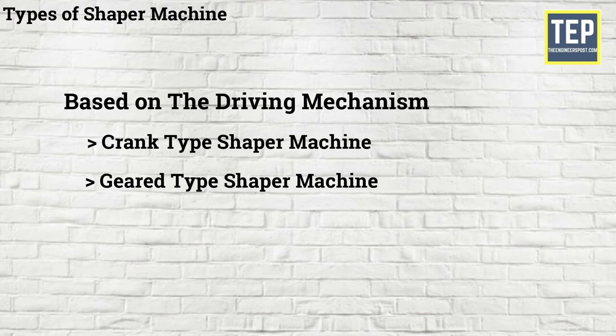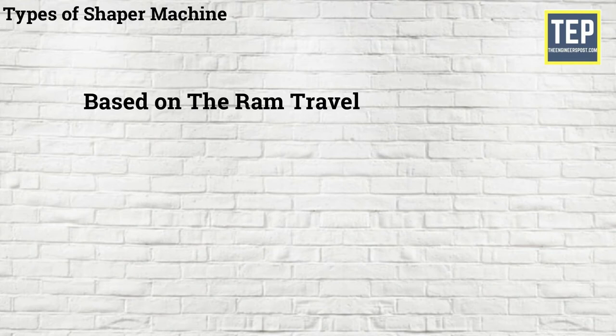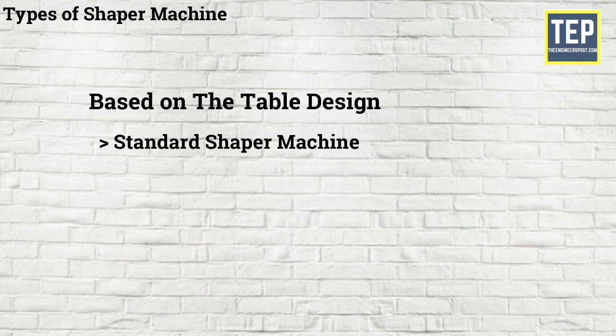Based on the RAM travel the different types of Shaper Machine are Horizontal Shaper Machine and Vertical Shaper Machine. Based on the table design the different types of Shaper Machines are Standard Shaper Machine and Universal Shaper Machine.